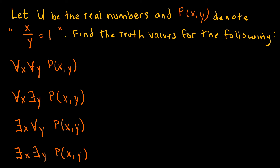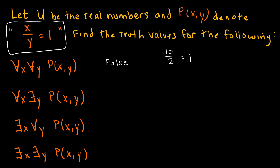Here's one for you to try — feel free to pause and try these questions yourself first. This is a similar question but using division. The domain is real numbers, and p(x,y) denotes x divided by y equals 1. Find the truth values. The first proposition — for all x and all y, x divided by y equals 1 — is obviously false. A counterexample: 10 divided by 2 equals 1 is not true. It's false because it doesn't work all of the time.